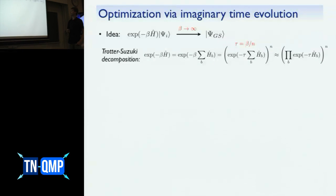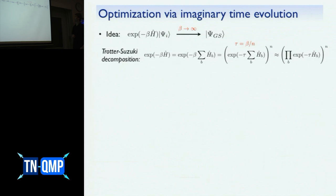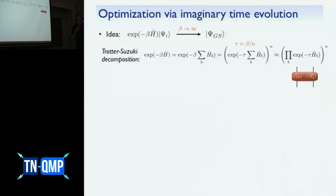Typically we can't express this operator directly, so we decompose it into small pieces using a Trotter-Suzuki decomposition. We write the sum of nearest-neighbor Hamiltonian terms as a product of Hamiltonian terms by introducing a small time step tau = beta/n, splitting into n time steps. When tau is small we can approximate the exponential of the sum as the product of exponentials. This gives us two-body operators which we want to apply onto our tensor network to perform an imaginary time evolution, representing the resulting state again as a tensor network.